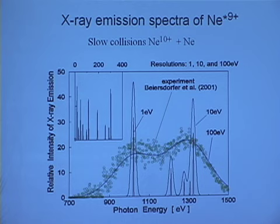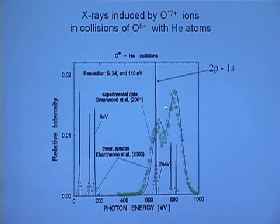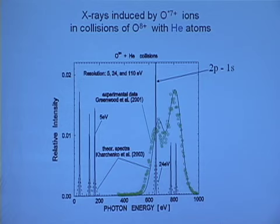Here is another example from the Arachachan group — emission of the oxygen-7 ion in a collision of oxygen-8 with helium. The same experimental symbols are shown as green circles, and the theoretical sharp spectra are here. If we include the resolution corresponding to their experiment, you see this black line, which is in good agreement. These are soft photons. It would be great to have an experiment that simultaneously measures all soft photons and all important X-ray photons — at least extreme ultraviolet and X-ray together would be very useful.